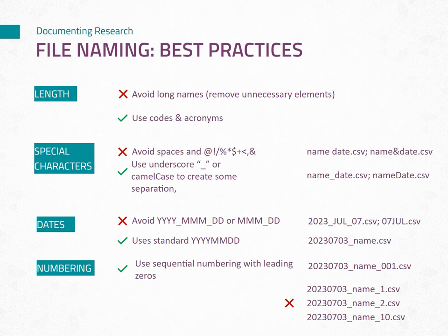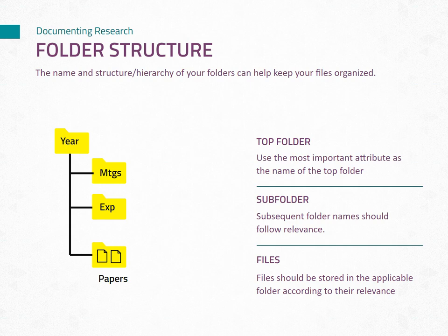This approach helps maintain file organization and facilitates accurate file retrieval. By implementing these best practices, including managing length, avoiding special characters, utilizing date formats, and employing sequential numbering with leading zeros, you can streamline your file organization and enhance your ability to locate and work with files effectively. In addition to effective file naming, organizing your folders with a well-designed hierarchy is vital for efficient file management. By establishing a thoughtful folder structure, you can easily navigate and locate your files based on relevant attributes.